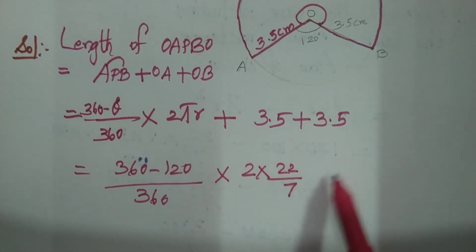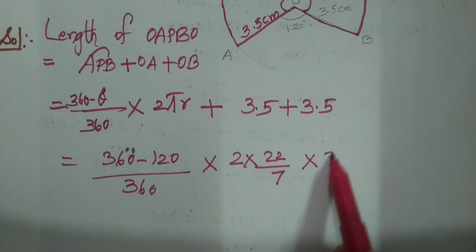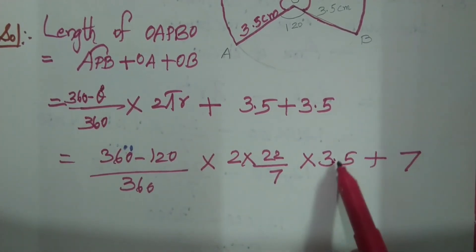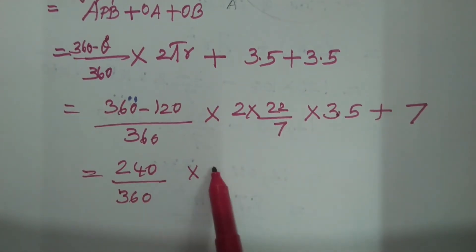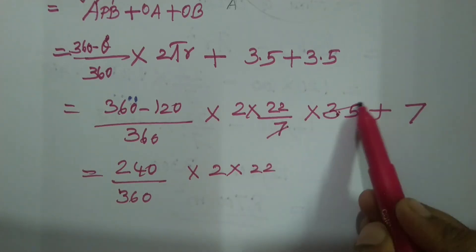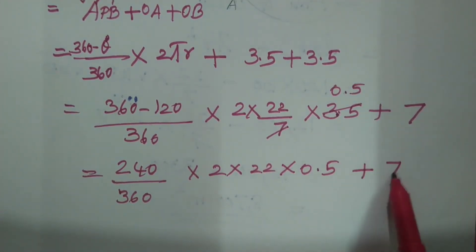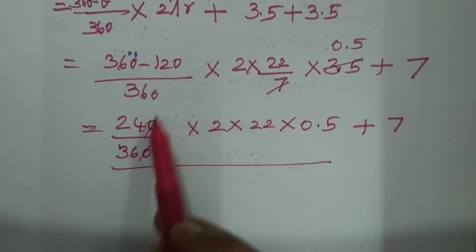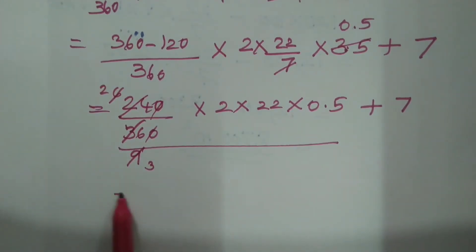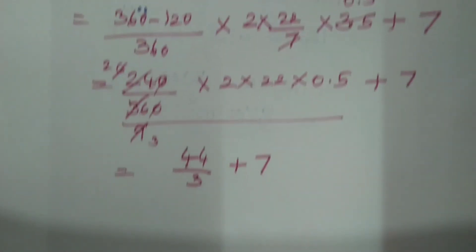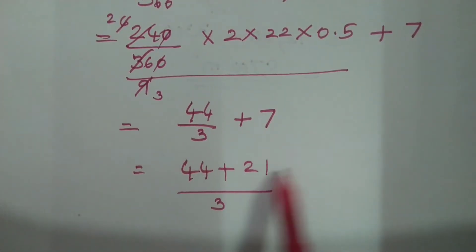So 360 minus theta because I add 360. Theta by 360: 360 minus 120 by 360 into 2 into 22 by 7. Into radius r is 3.5. Plus 3.5 plus 3.5 is 7. 240 by 360 into 2 into 22 by 7 into 0.5 plus 7. 0.5 cancel. In the end 4 table 9 6. Again 3 table, again 3 table 3. That's all for this.